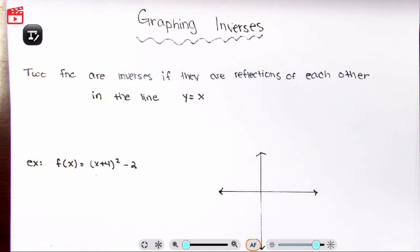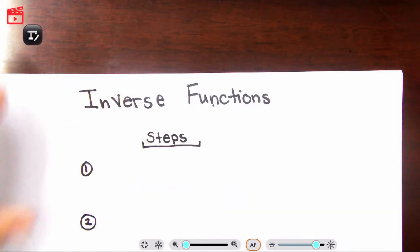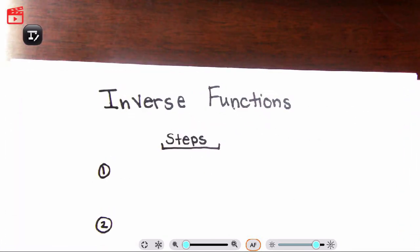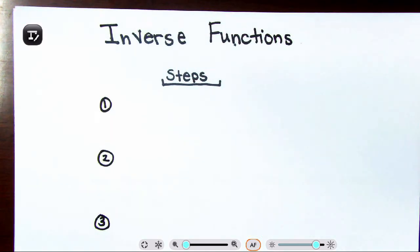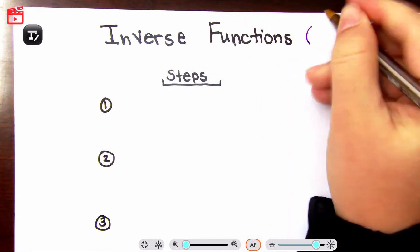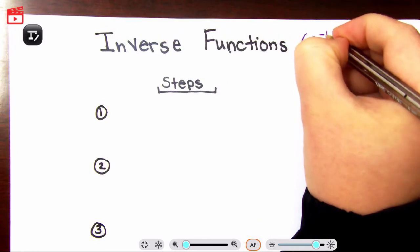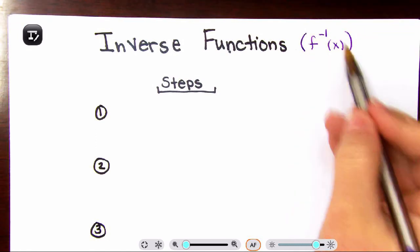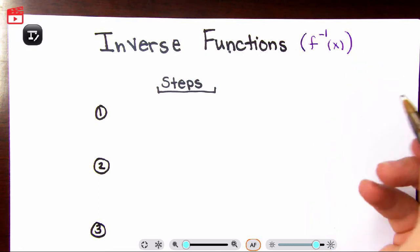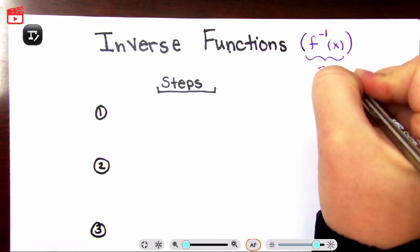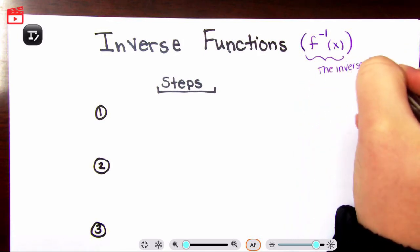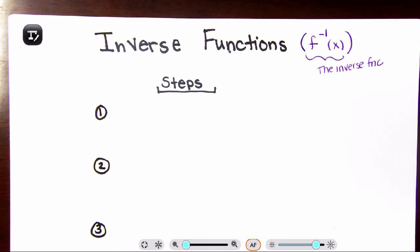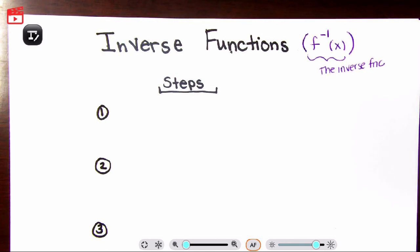What we're going to mainly focus on is graphing inverses and solving inverses. Let's start with finding inverse functions algebraically, and then I'll show you how to graph them. The inverse function notation is f⁻¹(x). This is read as 'the inverse function of x' — we're not reading this as f to the negative one power. That is incorrect. It is the inverse function of x.